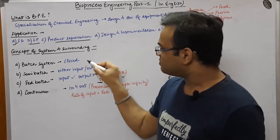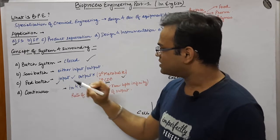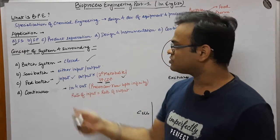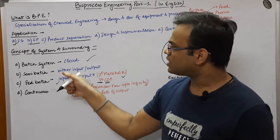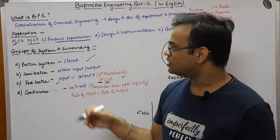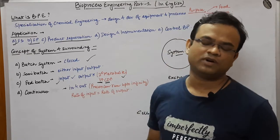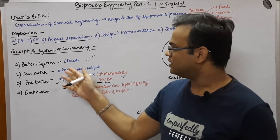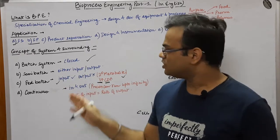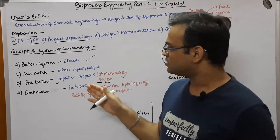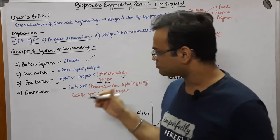So we have discussed the batch system and the fed-batch system. Now coming to the semi-batch system. In the semi-batch system, you are allowed either input or output, but not both simultaneously. You can either input the medium or take out the medium, but you cannot do both at the same time.